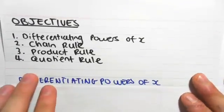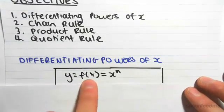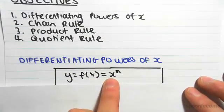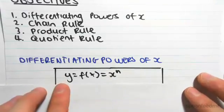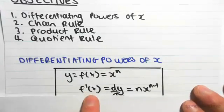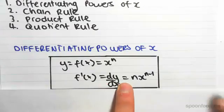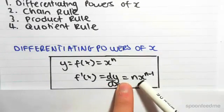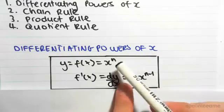Differentiating powers of x: if we have y equals f(x) which equals x to the n, when you find y dash or f dash of x or dy/dx, that equals - the n goes out the front, then x, and you subtract one from that power, so n minus one.